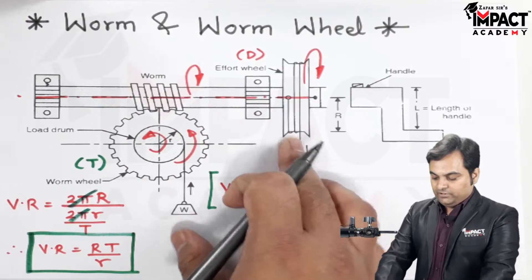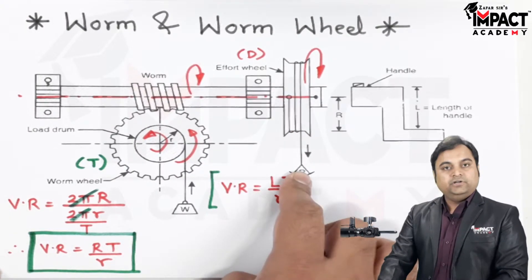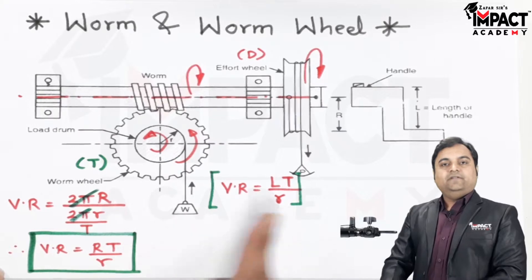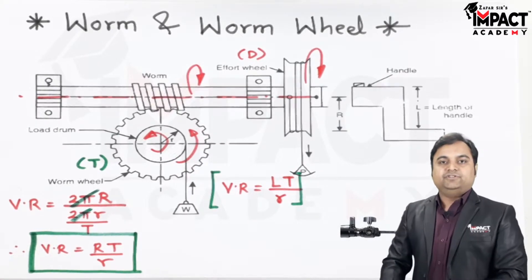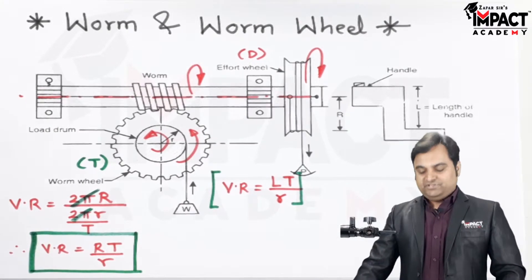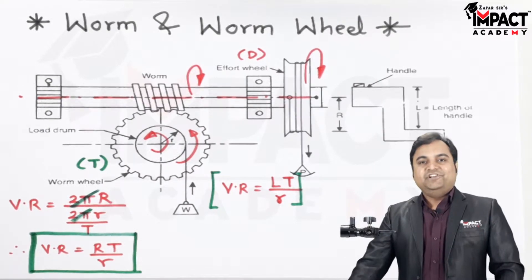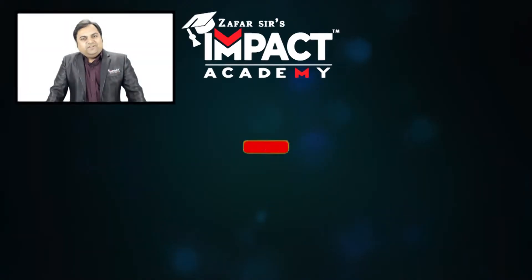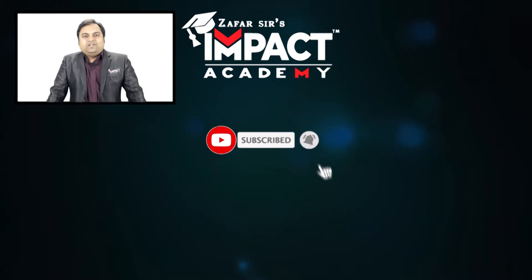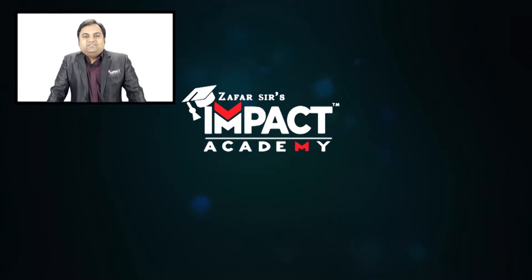we know the VR, that is velocity ratio, we can find the percentage efficiency for a worm and worm wheel. If you find my videos helpful, you can like, share, comment and subscribe to our channel and share it amongst your family and friends. Thanks for watching.